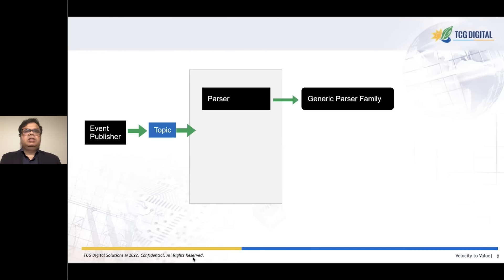The framework provides a set of parsers based on a generic parser family built using predefined semantics. These parsers are capable of handling messages of different data types like XML, JSON, and text, and are fully extensible to cater to new data definitions.